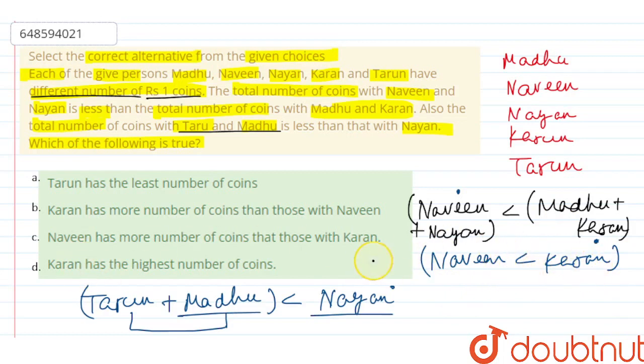तो इन दोनों statements से निकल कर आ रहा है: Karan के coins ज़्यादा होंगे। So I can say Karan has more number of coins than those with Naveen. तो आपको option B जो है वो correct हो गया। Thank you.